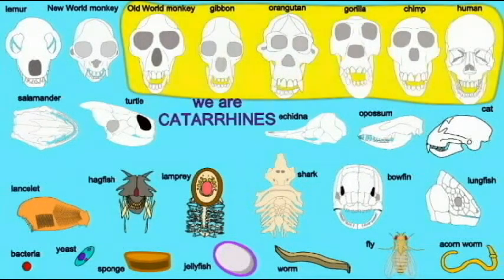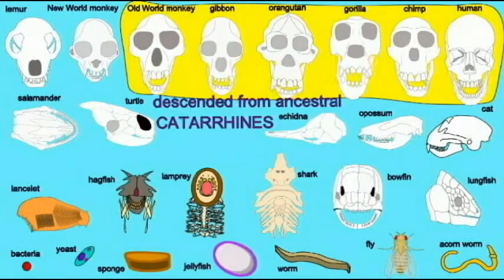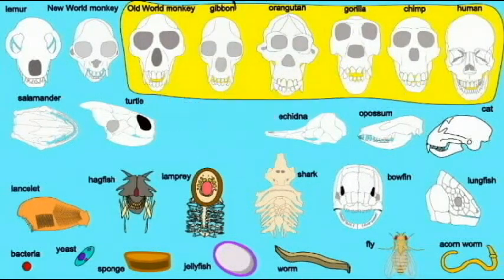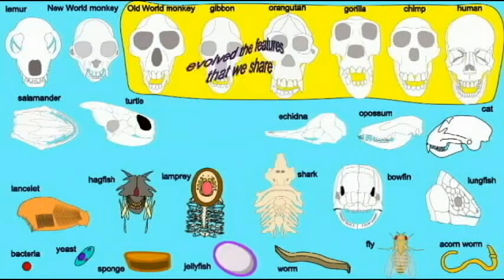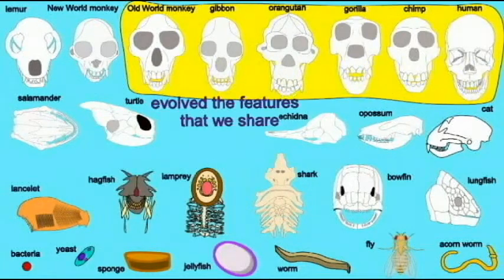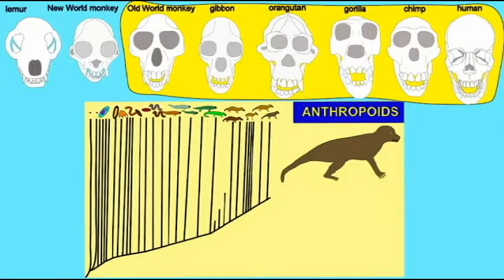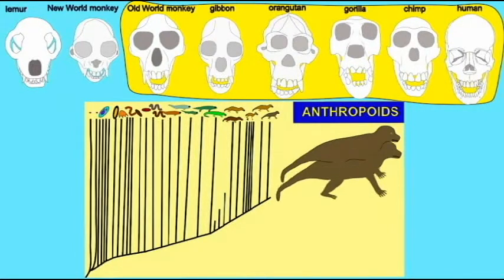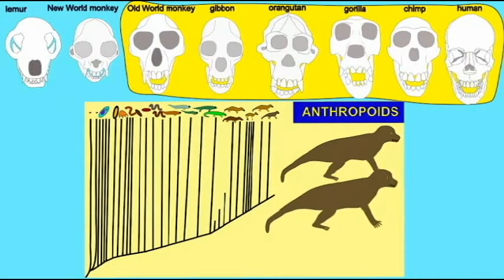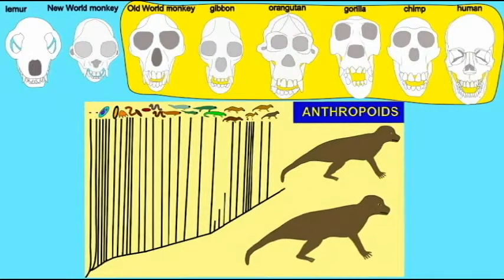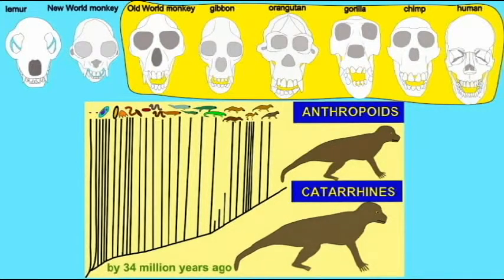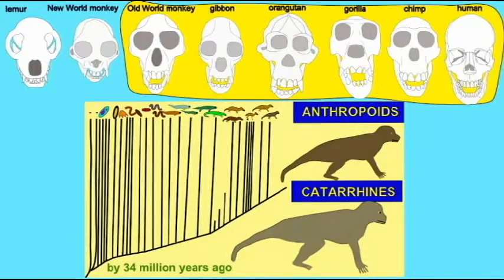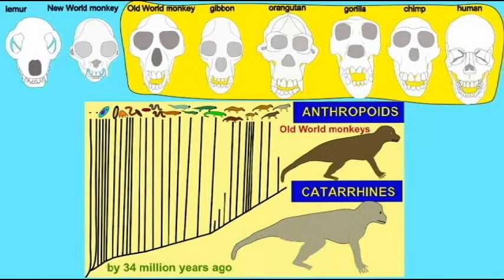We are Catarrhines, descended from ancestral Catarrhines — the Oligocene early Catarrhines of all the features that we share. In the Oligocene epoch, a new group of primates evolved in the anthropoid lineage. These are called the Catarrhine primates and include the Old World monkeys and the apes.